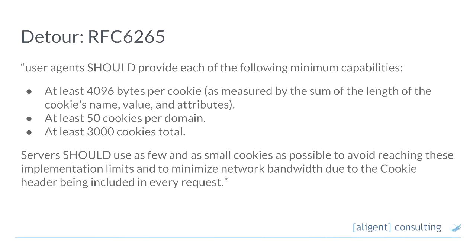So, we're using cookies quite extensively. How big can a cookie be? This turns out to be not an easy question to answer. Anyone who's done significant web development will know that what the standard document says and what the reality in the browsers is are often very different. This is one of those cases. According to RFCs, we can have at least 4K of data in at least 50 cookies for a domain, at least 3,000 in total.